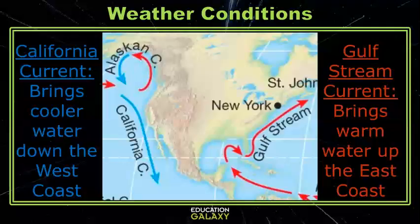The two main ocean currents affecting the U.S. are the California current, which pulls cold water from Alaska down the west coast, and the Gulf Stream current, which pulls warm water up the east coast from the Gulf of Mexico. These cold and warm water currents affect the temperature of the air around them, and thus the patterns of the prevailing winds.